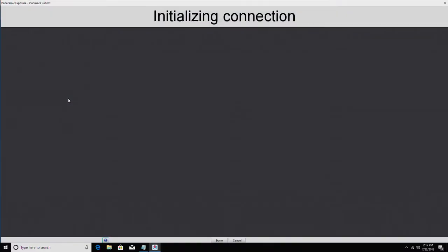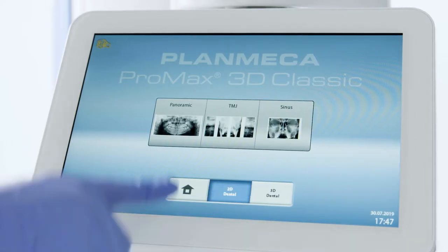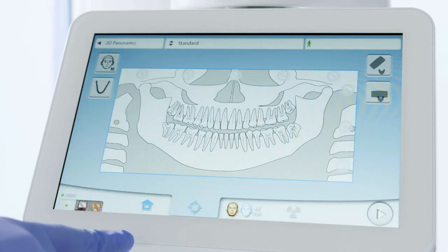Once the computer shows waiting for ready, walk over to the touchpad on the Planmeca Pro Max X-ray unit. Select 2D dental, then panoramic. In the upper left of the touchpad, choose the patient's size.